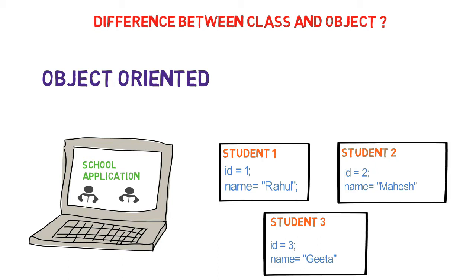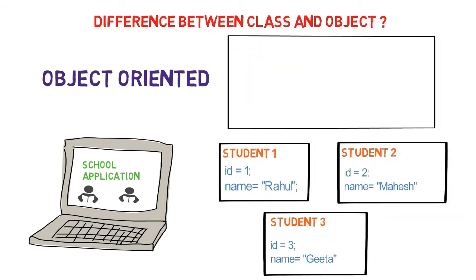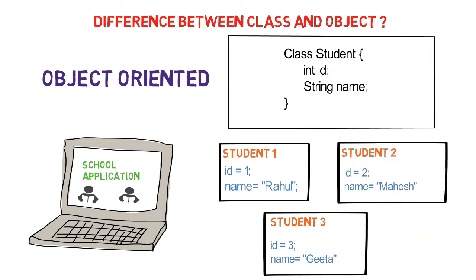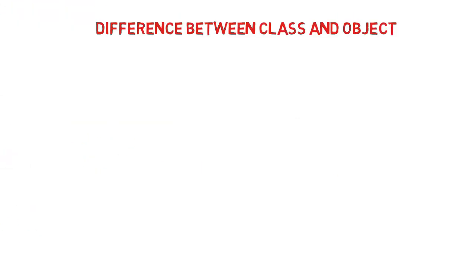We have to mention somewhere that the student has an ID, name, age, and all these properties. So we have to define a template for a student, and referring to that template, objects will be created and values assigned to them. You have to mention that there is a student which has properties like ID and name, and each student must have these properties. Those properties are defined inside a template, and that template is a class in Java. First we write a class, define the properties and behaviors inside it, then create objects of this class and assign values.